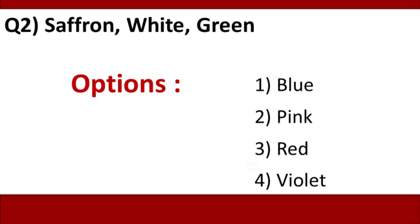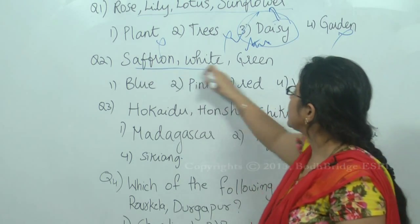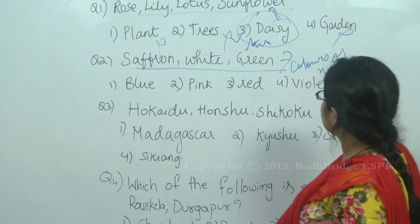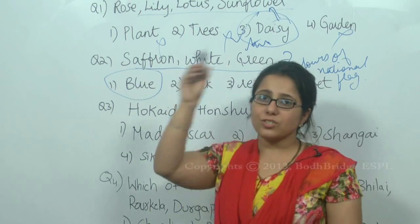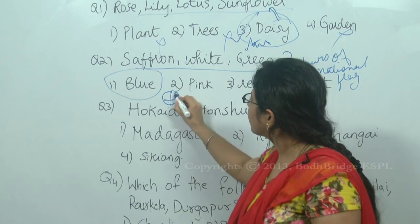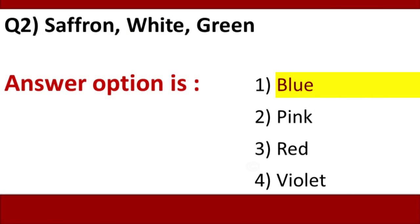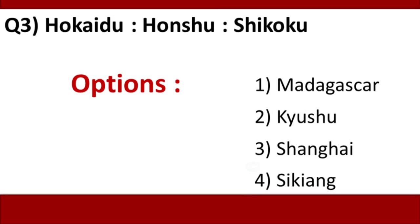Question 2: Saffron, White, Green. The options are: Blue, Pink, Red, Violet. All the options are colors, which makes this tricky. Saffron, White, and Green are the colors of our national flag. The other color in the flag is Blue, which is used in the wheel of the flag. So the answer is option 1, Blue. Pink, Red, and Violet are eliminated.